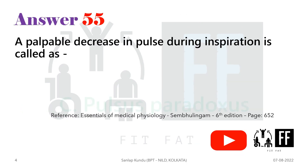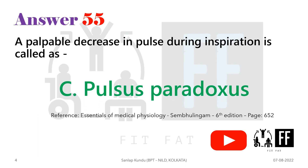The answer is option C — pulsus paradoxus — where there is a decrease in pulse during inspiration and increase in pulse during expiration. You can learn more about these abnormal pulses in the Sembulingum Physiology book.